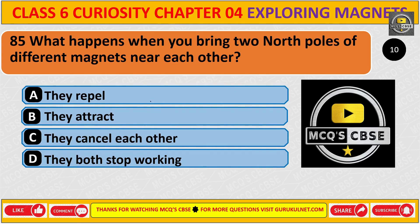What happens when you bring two North poles of different magnets near each other? The correct answer is C. They will repel each other.